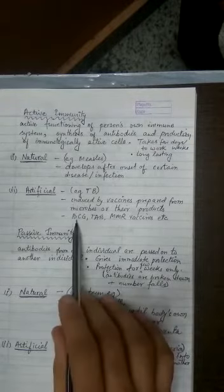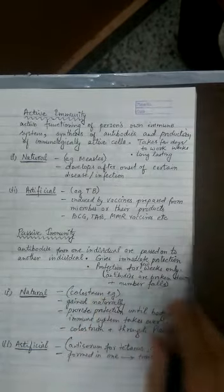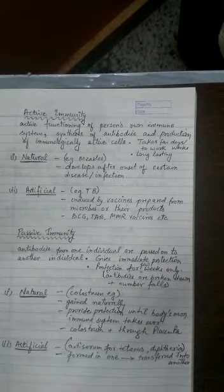Examples we all know there are so many vaccines, we know that BCG, TAB, MMR vaccines are there. Now the next type of immunity is the passive immunity.